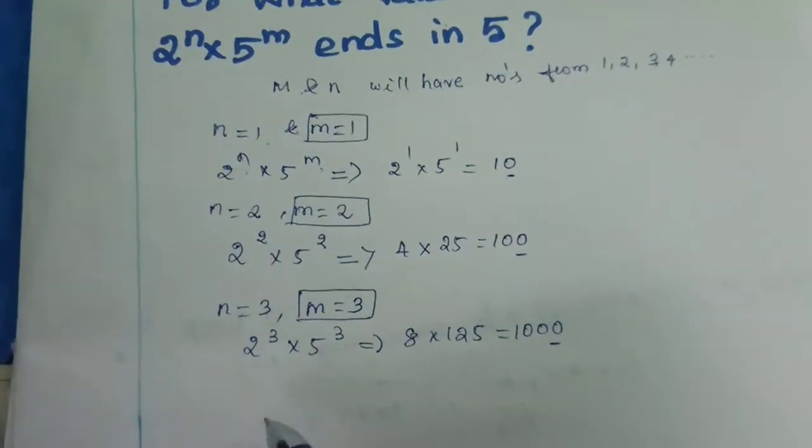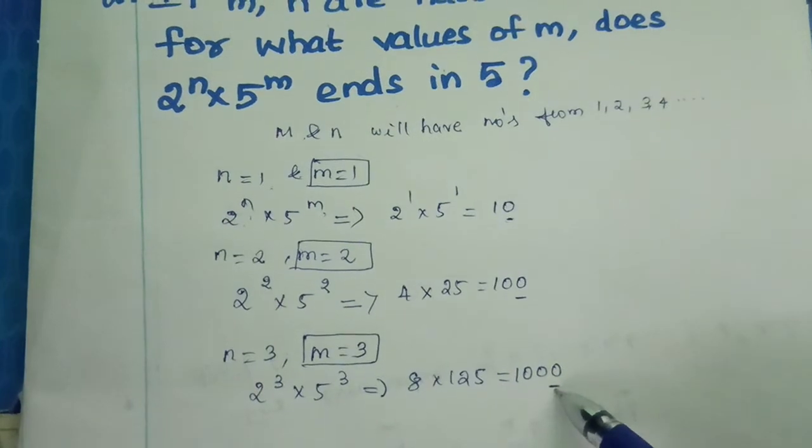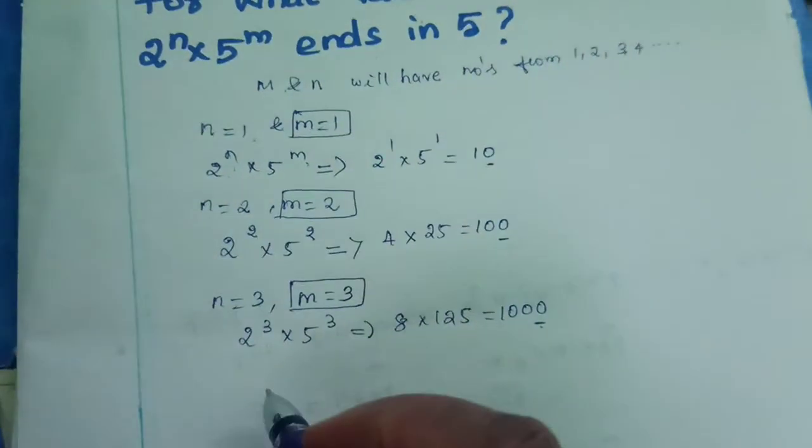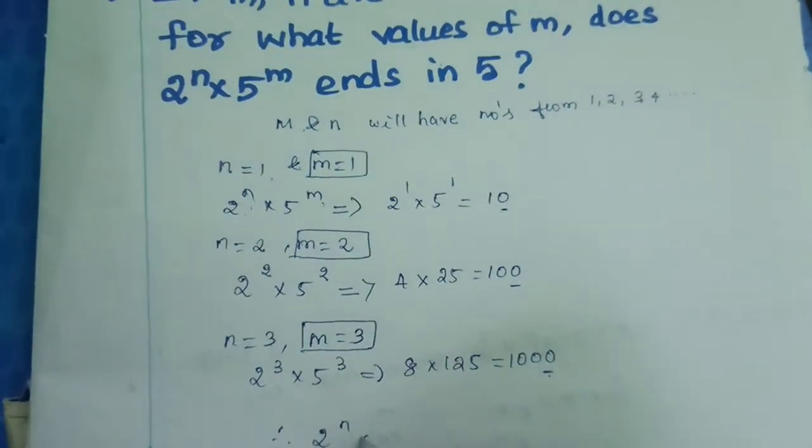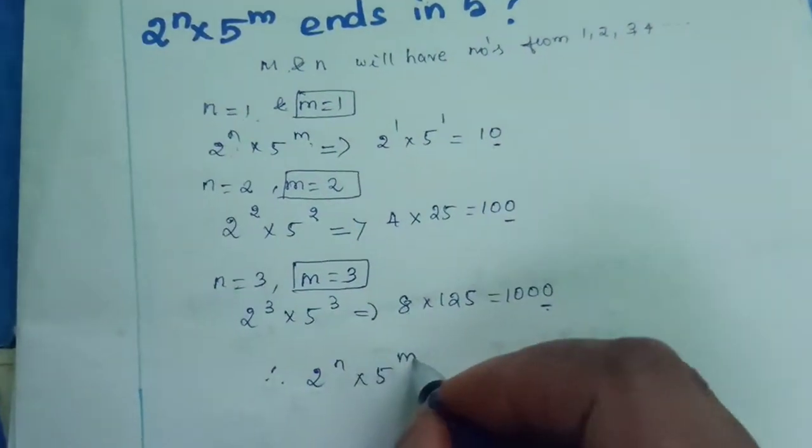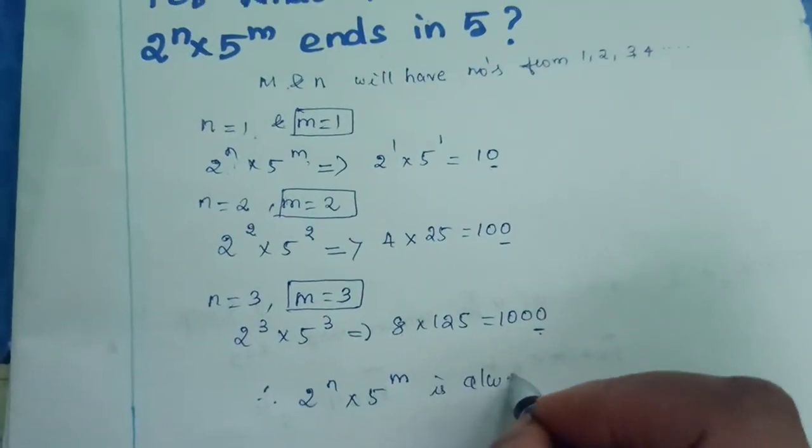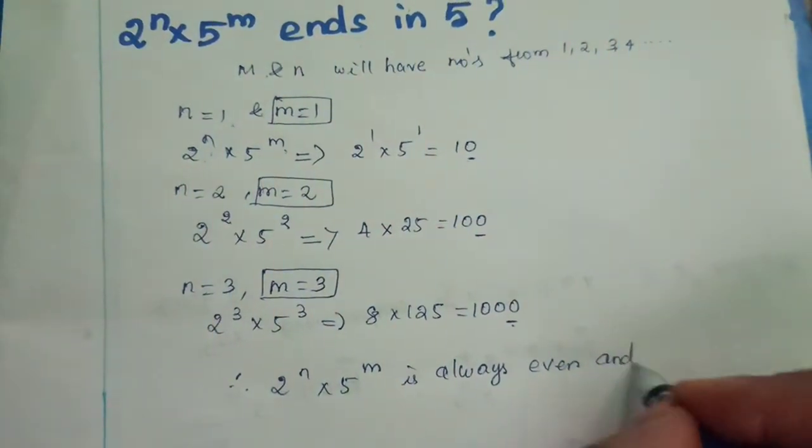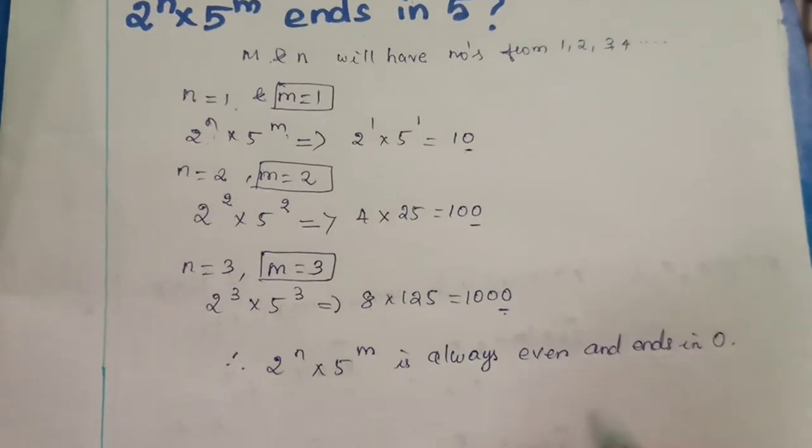When you put like this, n is equal to 4, m is equal to 4, so definitely the answer is going to end in, the product answer is going to end in digit 0 only. Therefore, 2 power n into 5 power m is always even, you can see. Always even and ends in 0. Ends in 0.